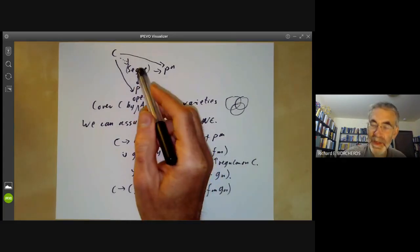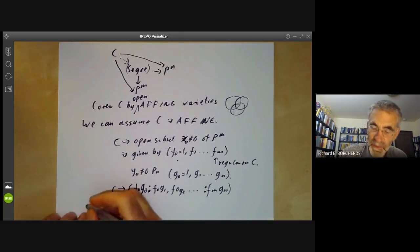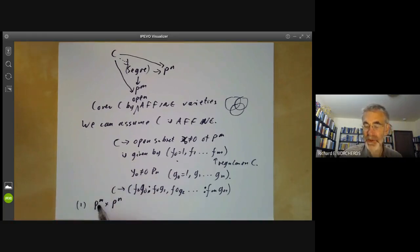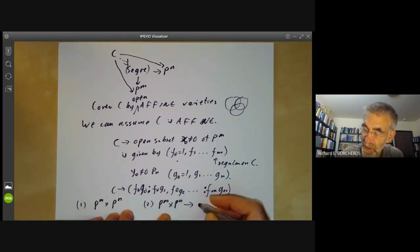Notice, by the way, that the Segre embedding is really a combination of two almost completely different constructions. First of all, we have a construction of a product P to the M times P to the N, where we're sort of implicitly doing this by taking an open affine cover of P to the M and an open affine cover of P to the N, taking products of these affine sets of the affine covers and then gluing them together. That gives us an abstract variety, P to the M times P to the N. Secondly, we're constructing a map from P to the M times P to the N to a projective space P MN plus M plus N.